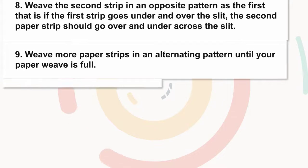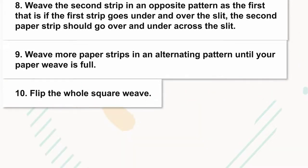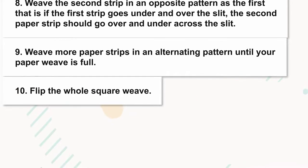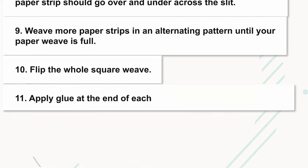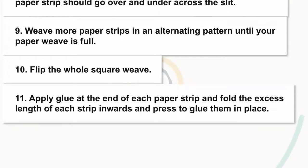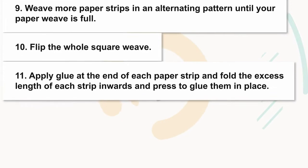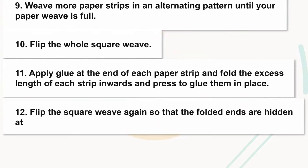Step ten: flip the whole square weave. Step eleven: apply glue at the end of each paper strip and fold the excess length of each strip inwards, and press to glue them in place.